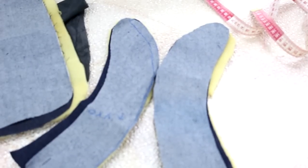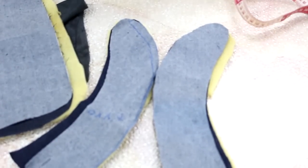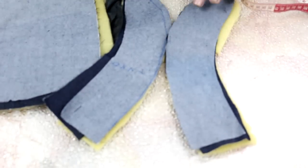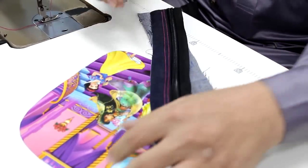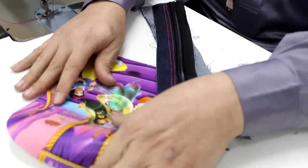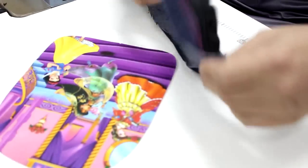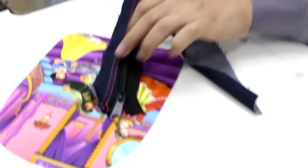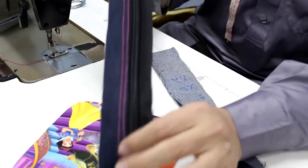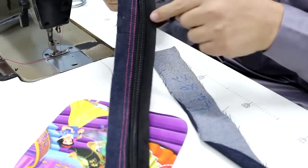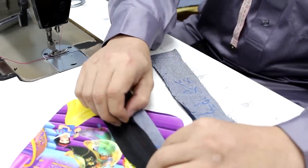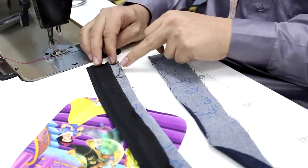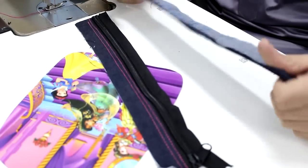Now I start assembly. First, I make the side with the picture. I attach a zipper at 37.